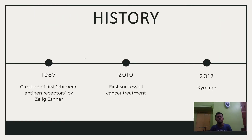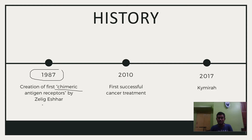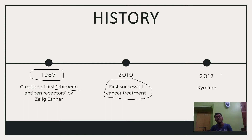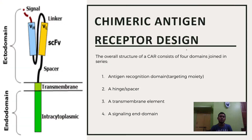A brief history of CAR T cells: it all started in 1987 with the creation of the first chimeric antigen receptors by Zelig Eshhar. Twenty-three years later, the first successful treatment of cancer was done, and then in 2017, Kymriah introduced CAR T cells to clinical use.